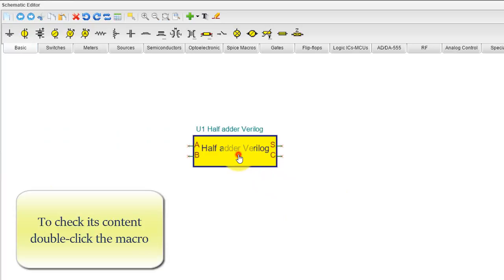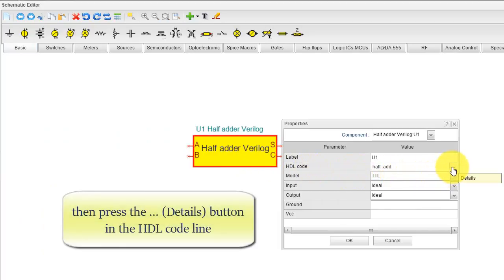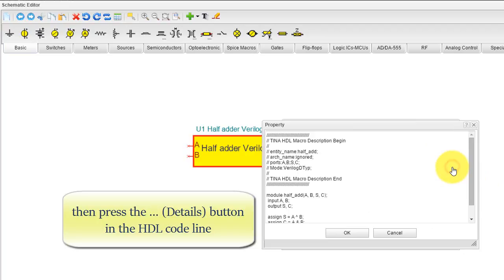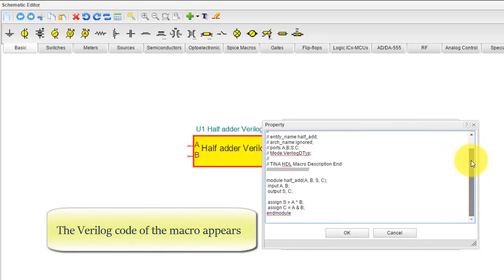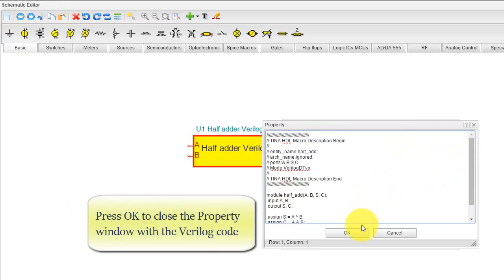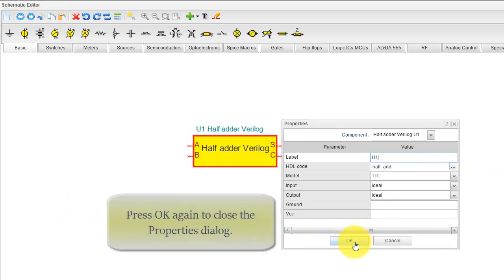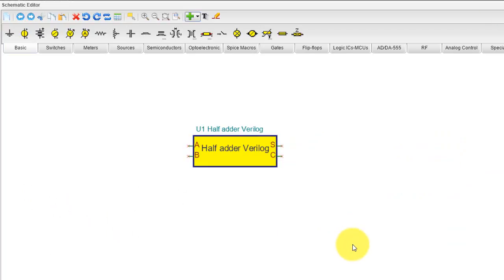To check its content, double-click the macro. Then press the Three Dots button in the HDL code line. The Verilog code of the macro appears. Press OK to close the property window with the Verilog code. Press OK again to close the properties dialog.